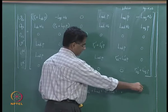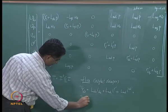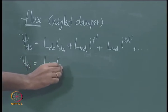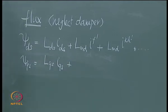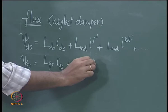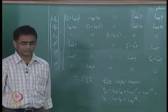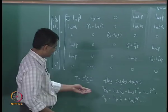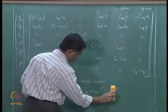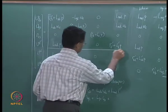Similarly, psi_qs would be written as the quadrature axis synchronous inductance l_qs multiplied by i_qs — there is no field along the Q axis in the rotor — plus l_mq times i_kq'. If there are more damper representations, there would be additional such terms.